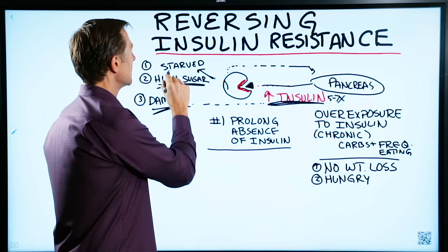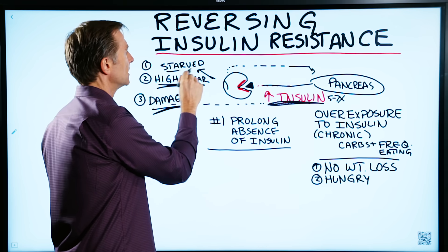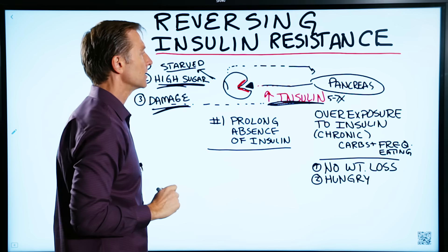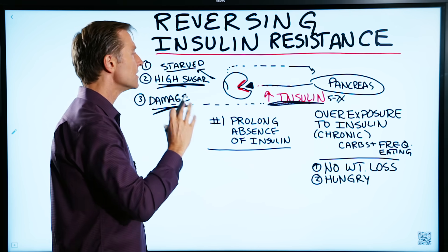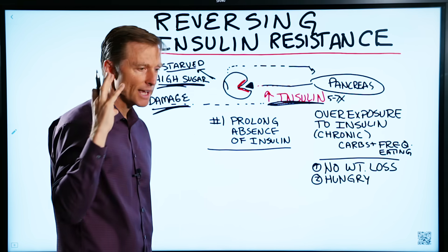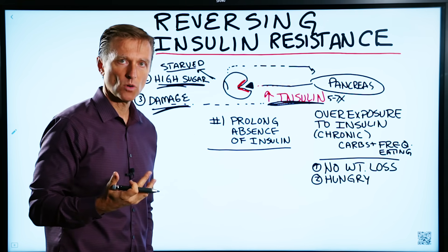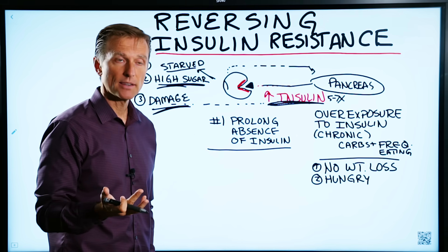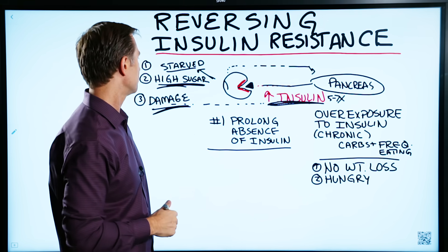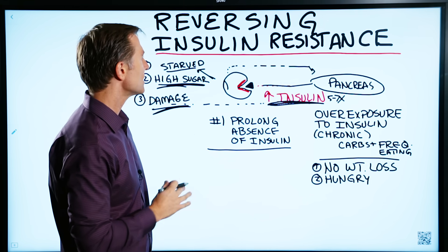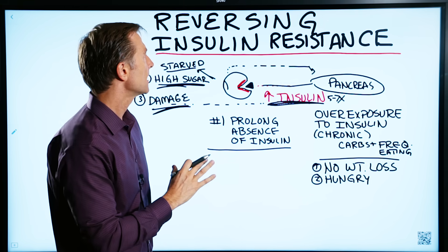Yet at the same time, the cells are starving and hungry. And if you have insulin resistance in the brain, if they can't get fuel, they die. That's Alzheimer's. So that's really what it is.